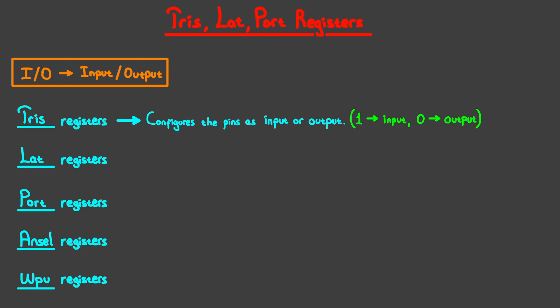Bits in the LAT registers — so LAT bits — will make their corresponding pins' output connect to either VDD or VSS, so it configures the output state of the pin, which also means this bit is only relevant if the pin is configured as output. Putting 1 in a LAT bit will make their corresponding pin connect to VDD, while putting 0 there makes it connect to ground.